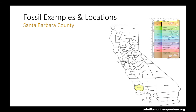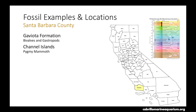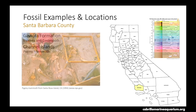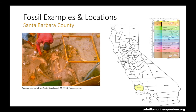The last county we'll touch on is Santa Barbara County. Here you can find the most recent aged fossils — late Cretaceous, around 75 million years ago, through the Quaternary, about 2.6 million years ago. Here you can find bivalve and gastropod fossils within the Gaviota Formation. And some of the coolest fossils you can find in California are pygmy mammoths on the Channel Islands. Here is a photograph of a pygmy mammoth being excavated from Santa Rosa Island back in 1994.